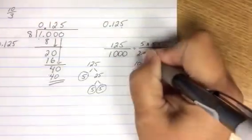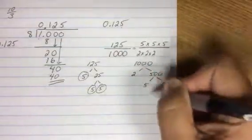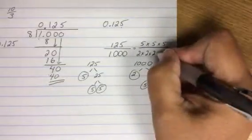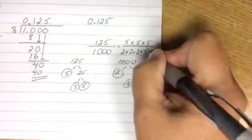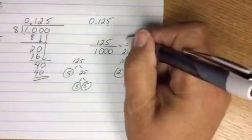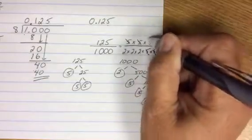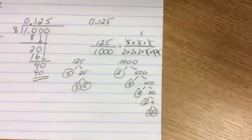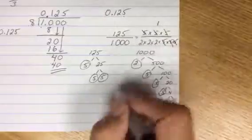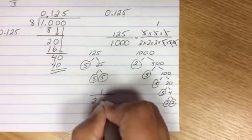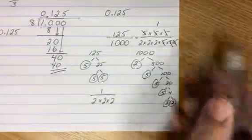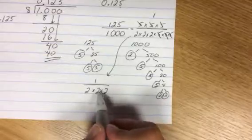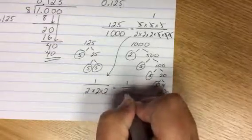Remember, we look at the tips. All right. This five cancels. This five cancels. This five cancels. When you have nothing left on top, the answer will be one. So what I have is one over two times two times two, which becomes, well, two times two is four times two is eight. One eighth.